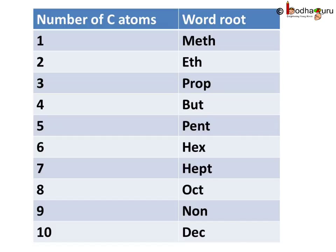Now, what about an alkane with two carbon atoms? Well, it is 'eth' plus A-N-E and we get ethane. So remember: when there is one carbon atom, the root is 'meth'; when there are two carbon atoms, it is 'eth'; for three, it is 'prop'; for four, it is 'but'.